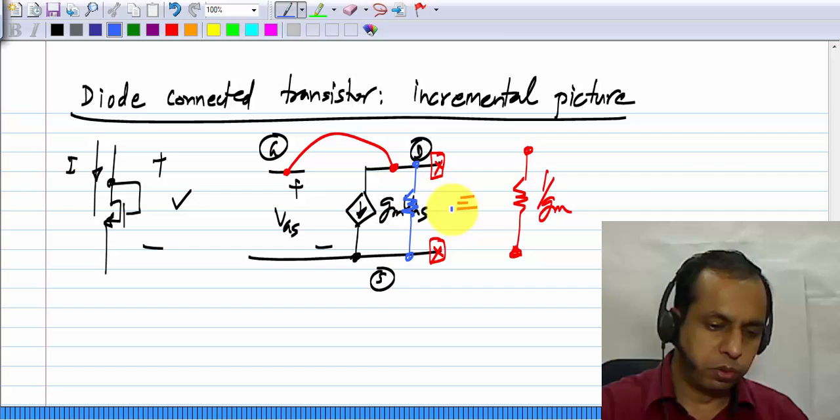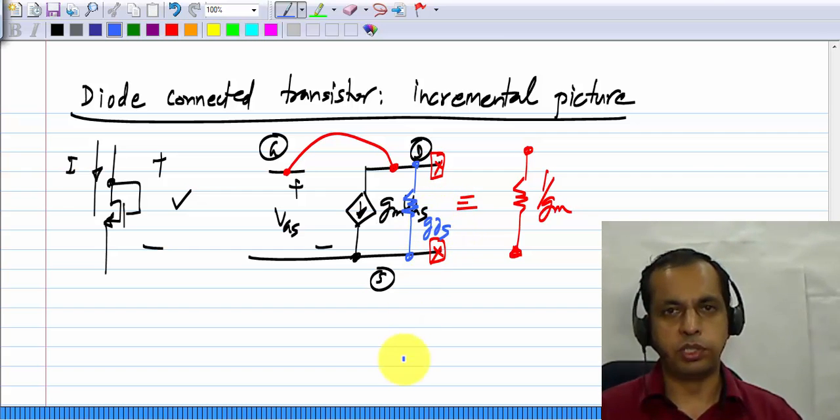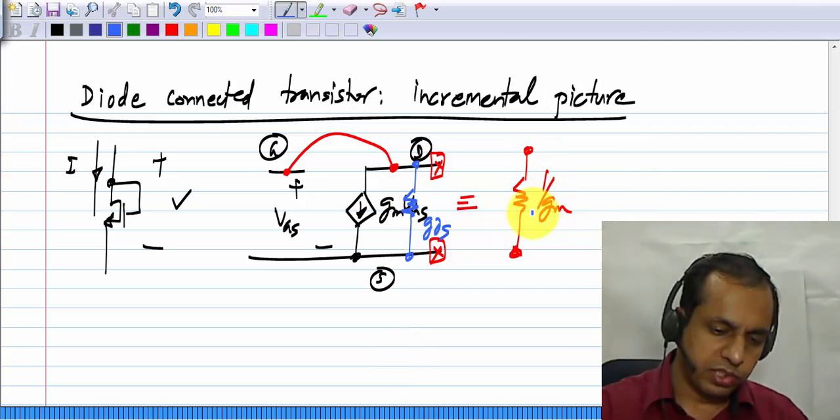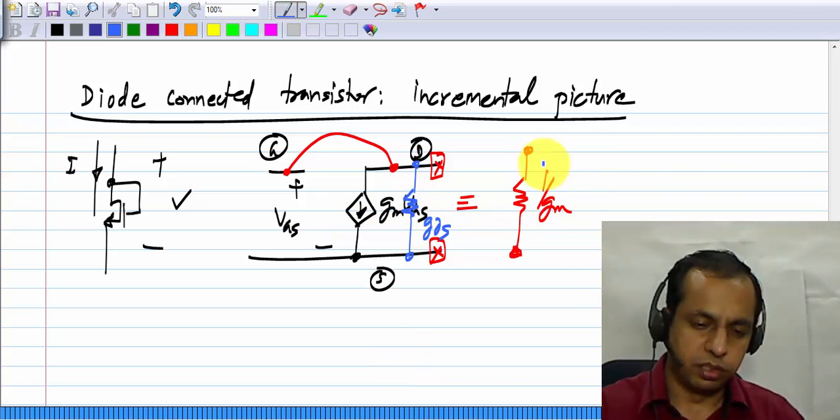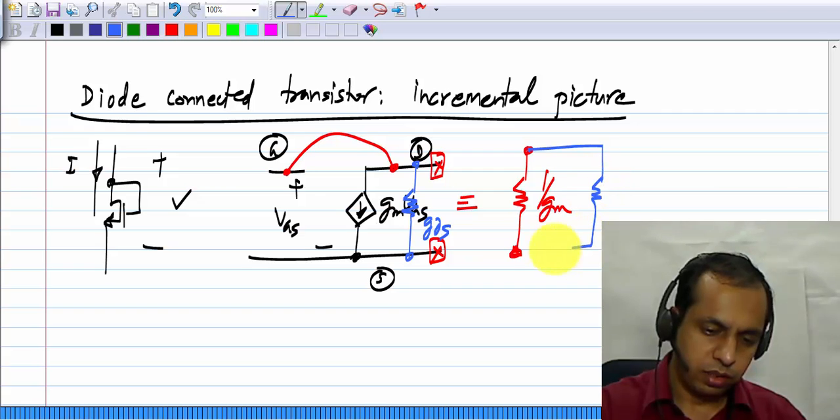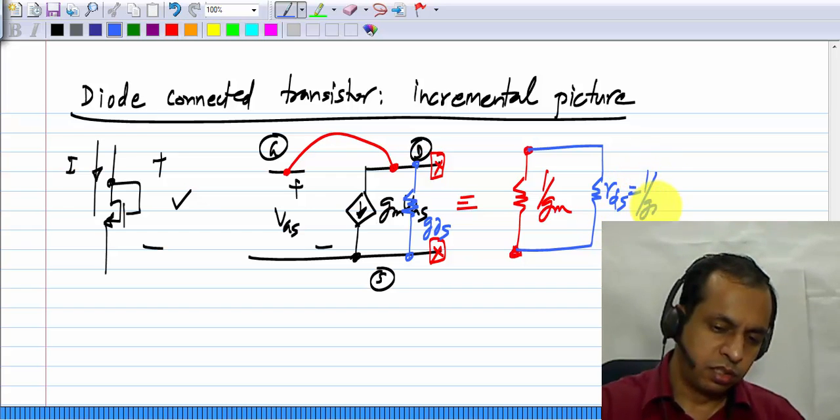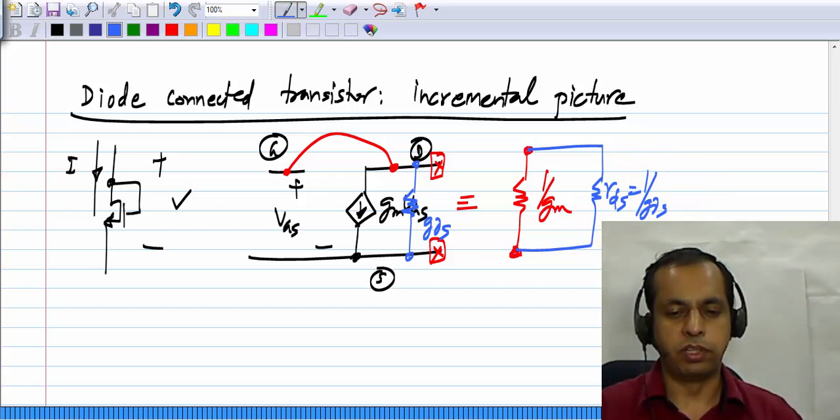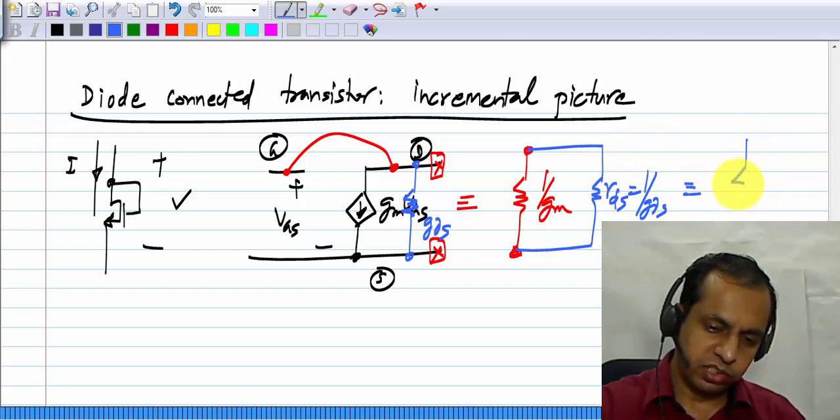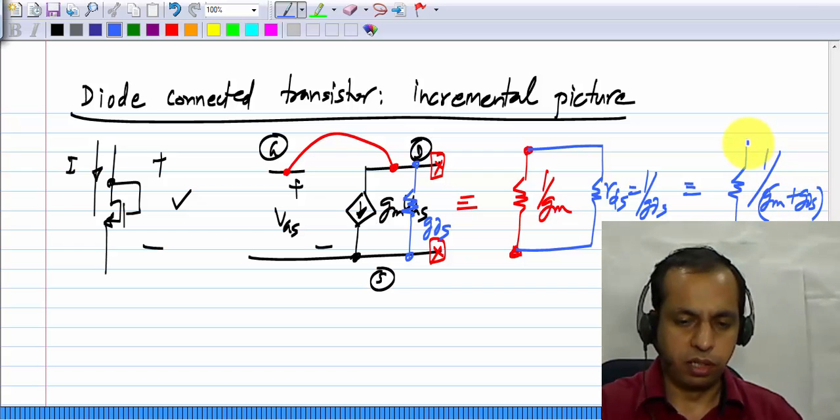And you can also include the output conductance of the transistor in saturation region. If you do include that, what happens is that it appears in parallel with this one. This will have a resistance R D S, which is the reciprocal of the conductance G D S, and the whole thing will be equivalent to a single resistor of value 1 over G M plus G D S. The conductances add, because they are in parallel.